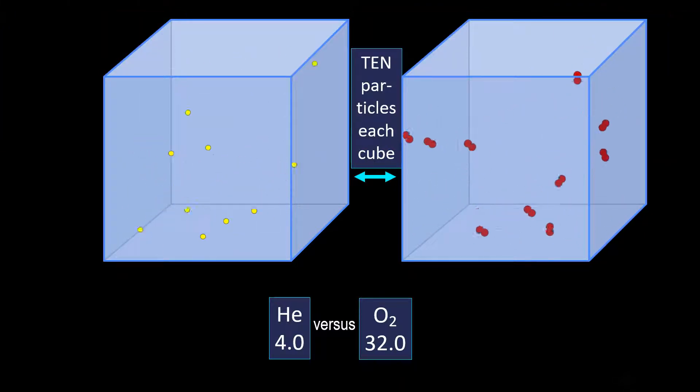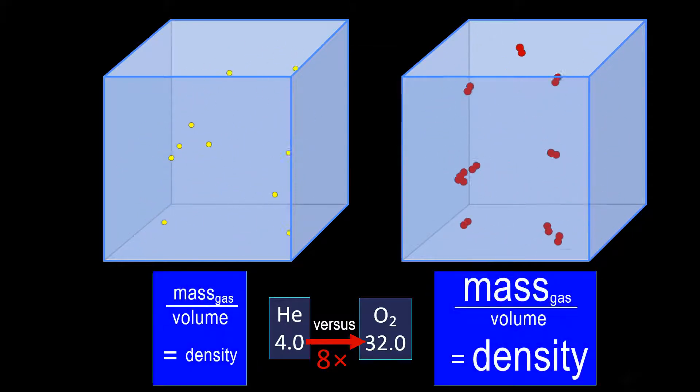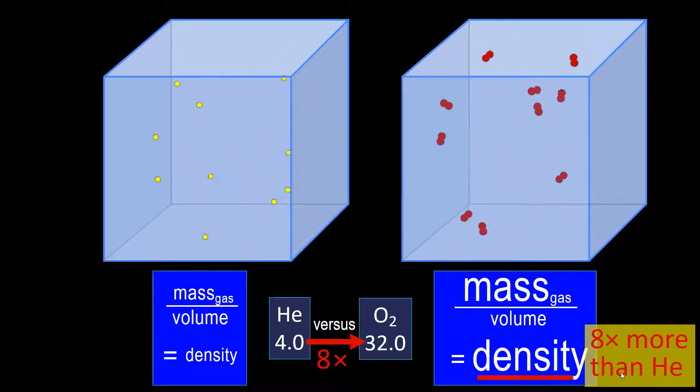Both illustrations have the same number of particles in the same volume, but the periodic table mass of the oxygen molecule is 8 times the mass of the helium atom, and so the density of oxygen will be 8 fold higher.